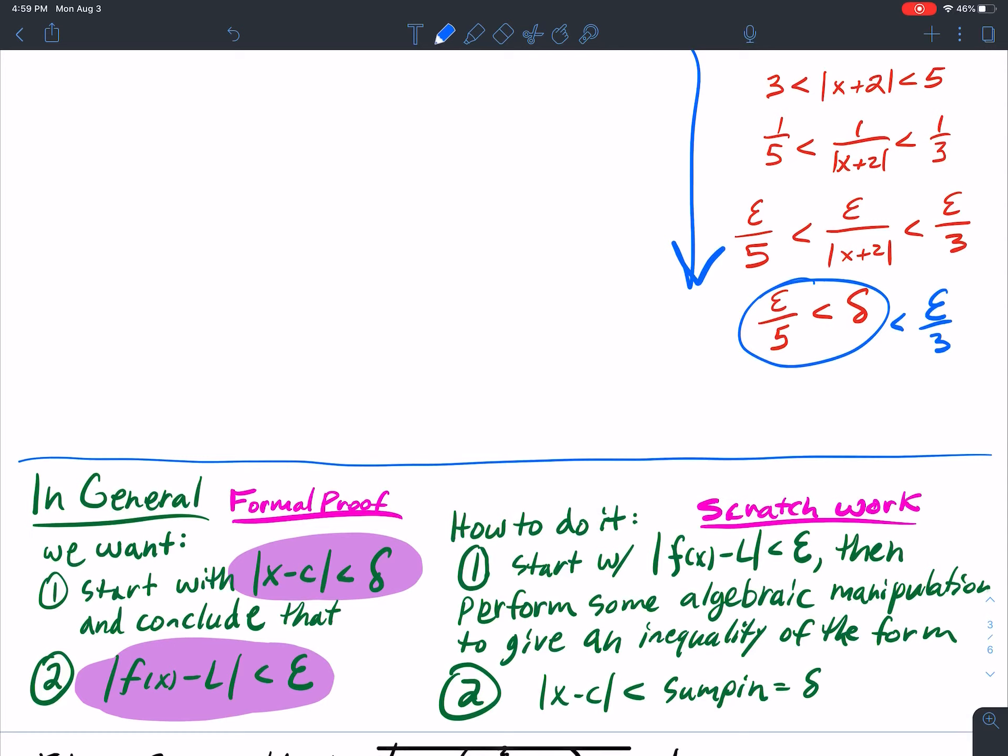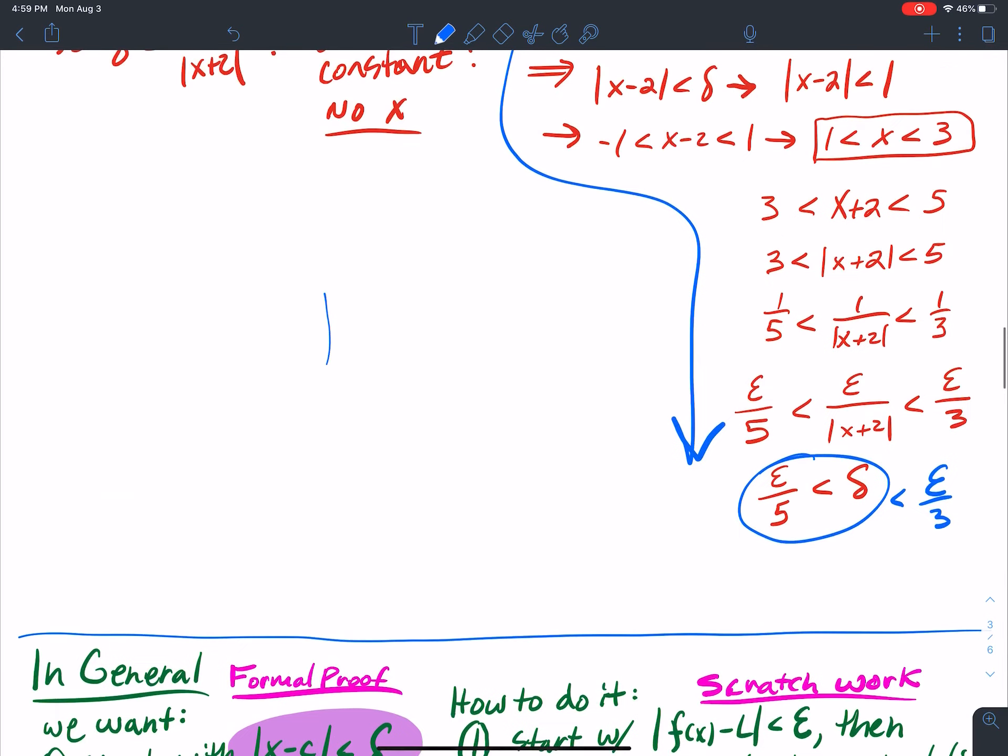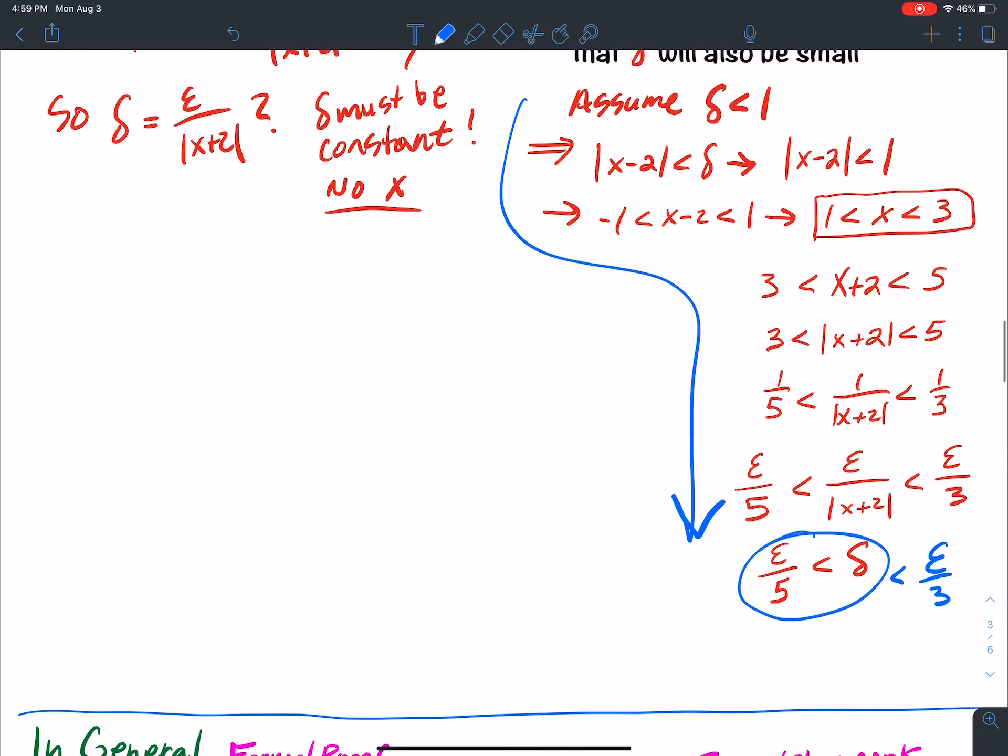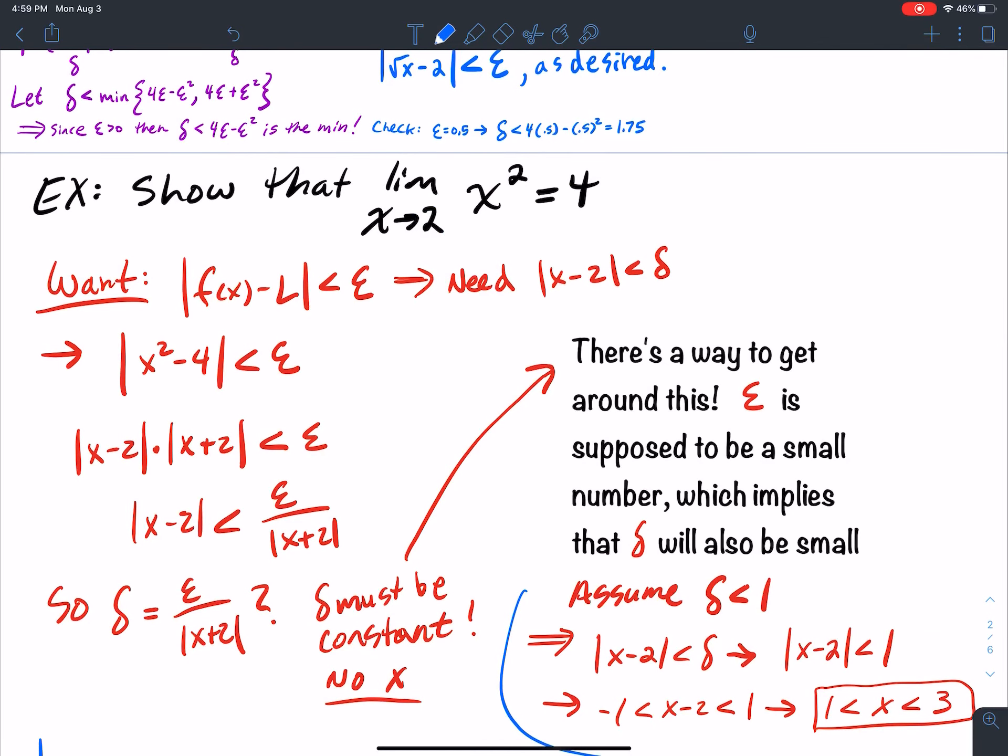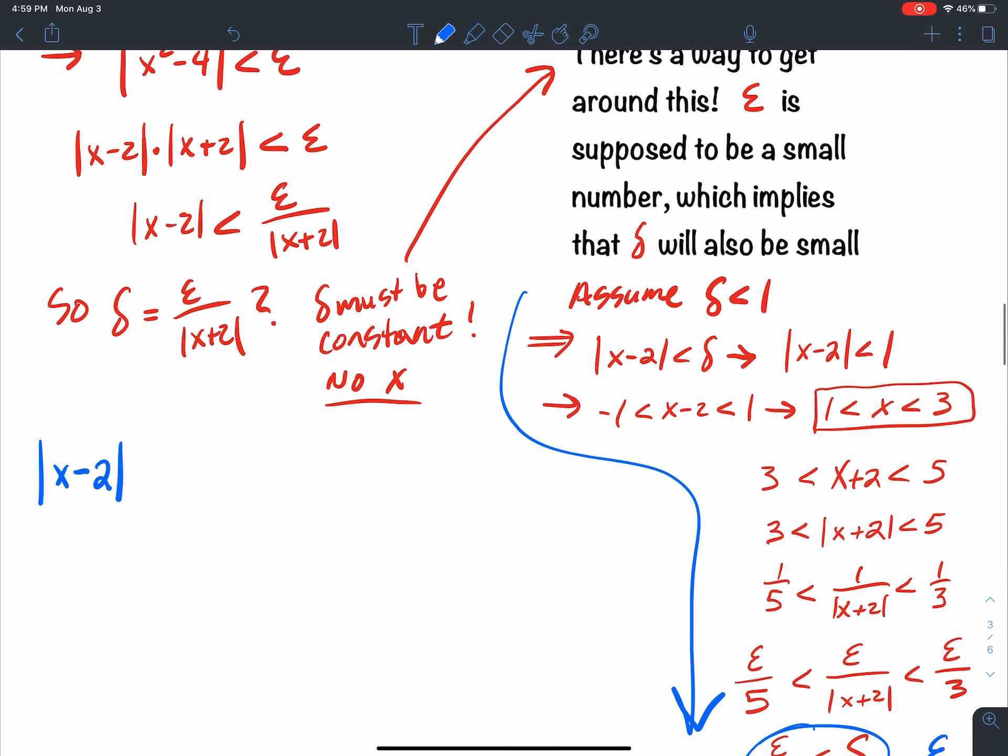Now, to do the formal proof, I start with x minus c less than delta. So absolute value x minus c, now I was taking the limit as x went to 2 here. And then less than delta.